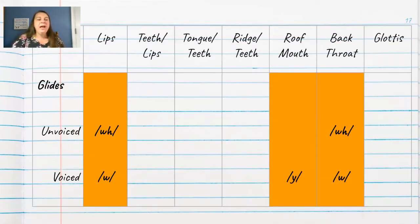So we have an unvoiced glide that we don't use very often in American English. It's more common in British English. And then we have the voiced glide like in wagon and water.